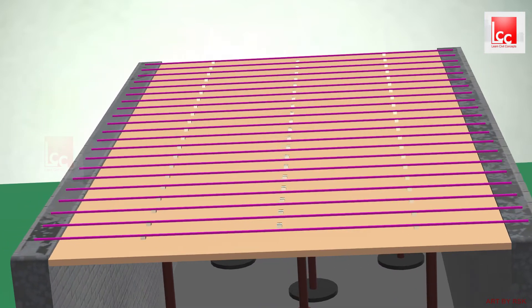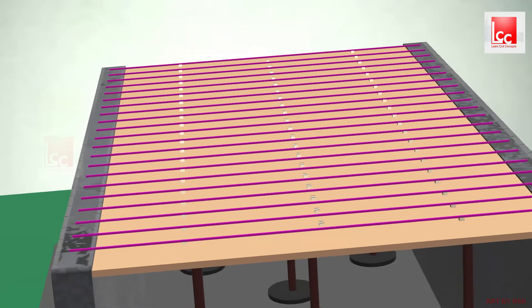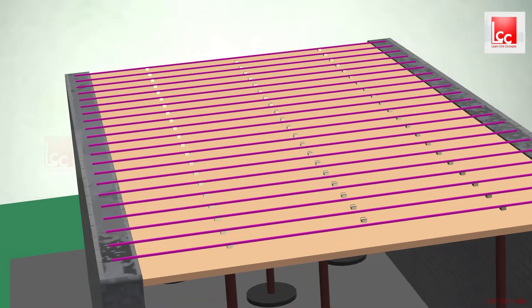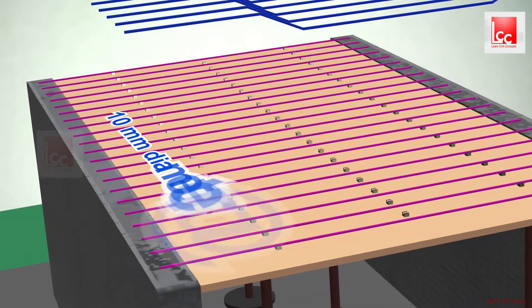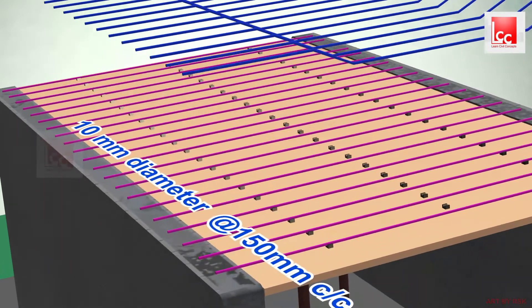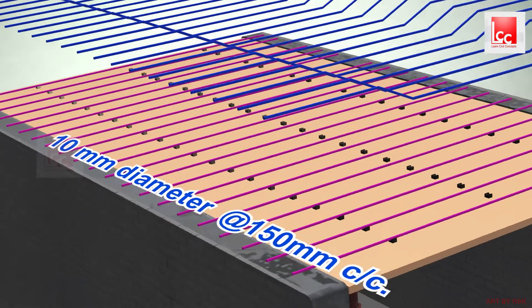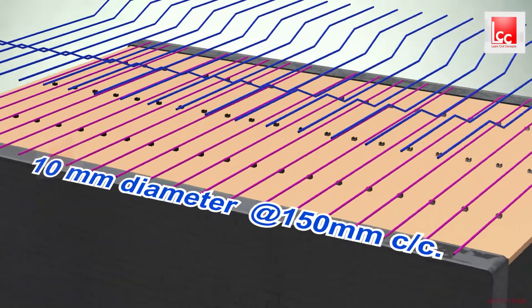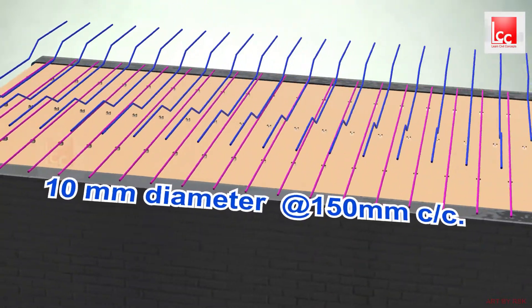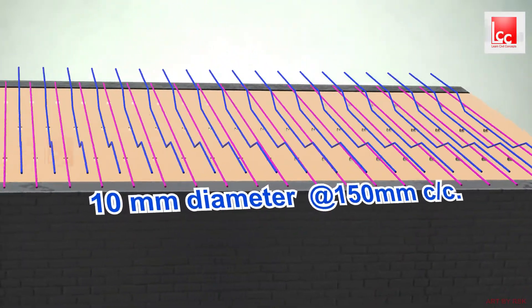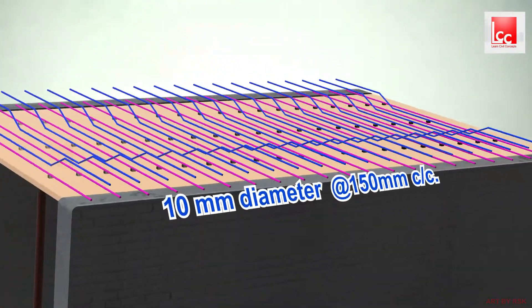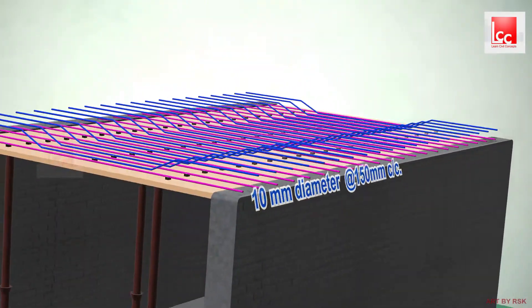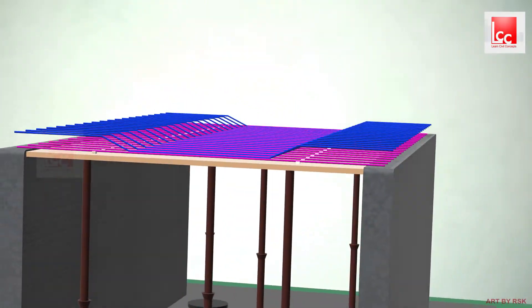After laying this, we will lay the main cranked bar of 10mm diameter having equal spacing at the rate of 150mm center to center.